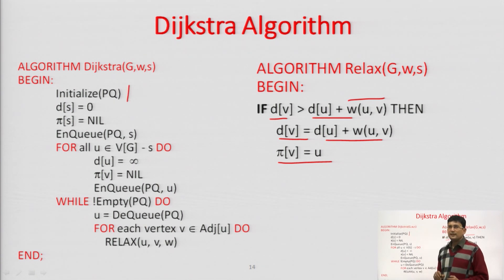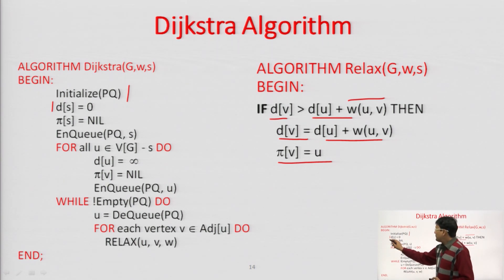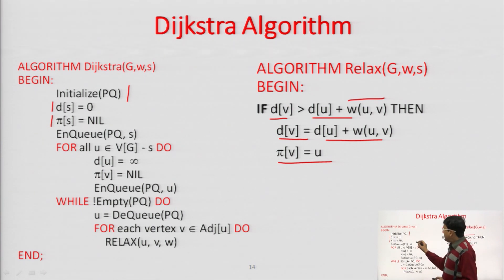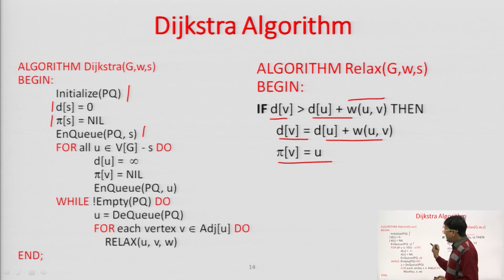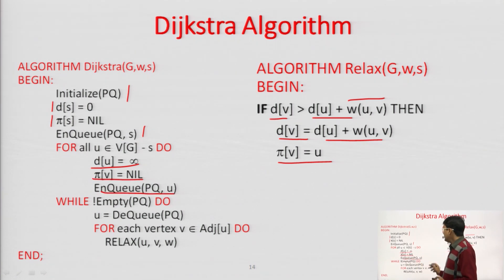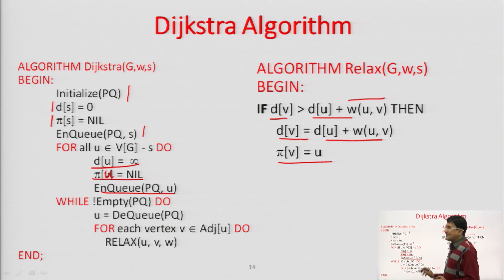In the Dijkstra's algorithm, first we initialize: we set the distance of source to zero. We set the predecessor of S vertex as nil, because the source vertex will have no predecessor. Then we insert this vertex into queue Q using an enqueue operation. After that, for all other vertices, we assume they are unapproachable from source — so we set all their distances to infinite, set their predecessors to nil, and insert each vertex into Q.